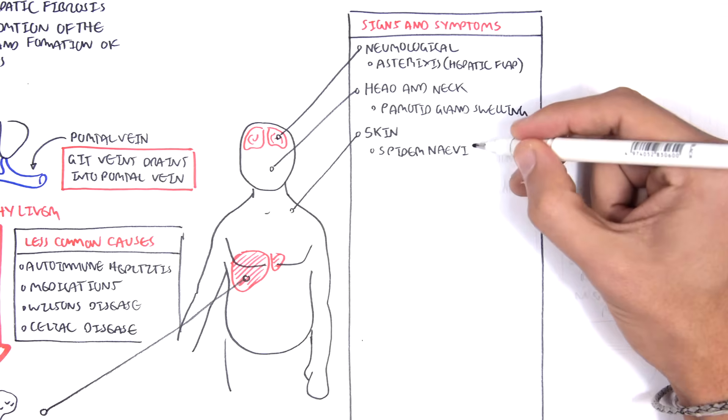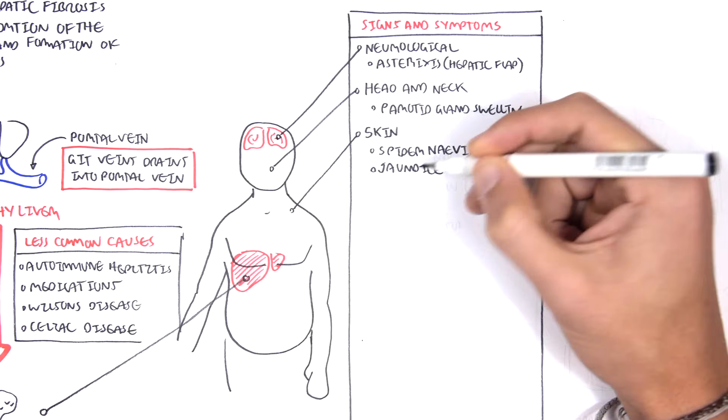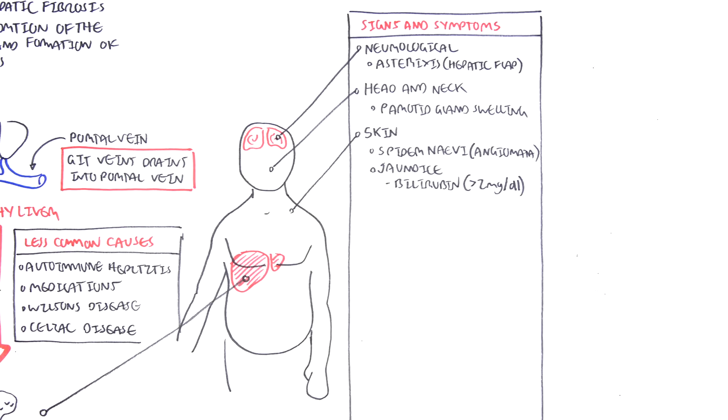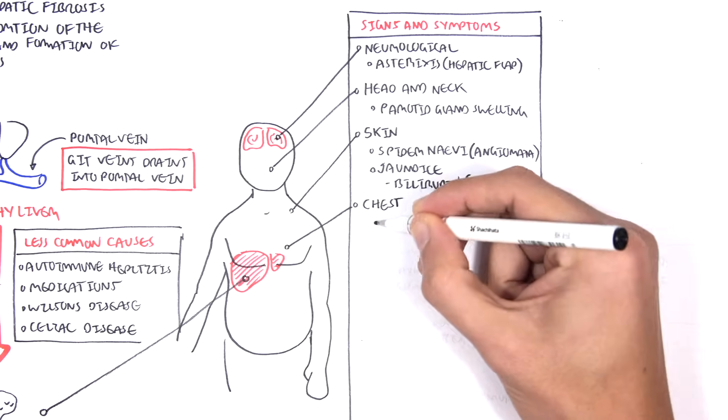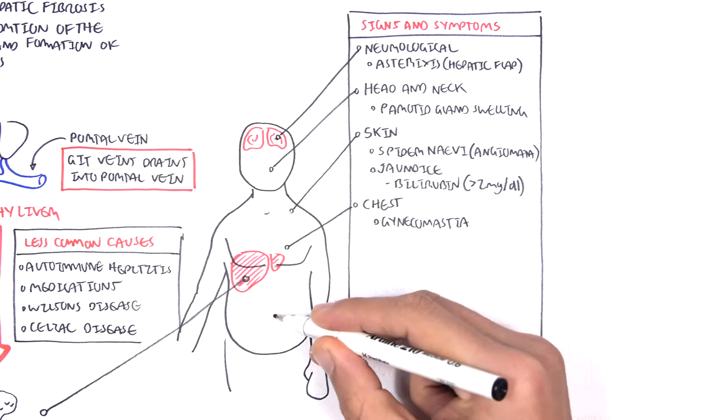Skin findings include spider nevi, which is also known as angiomata, as well as jaundice, with bilirubin greater than 2 mg per deciliter. Chest findings include gynecomastia.